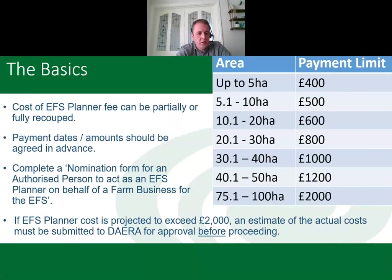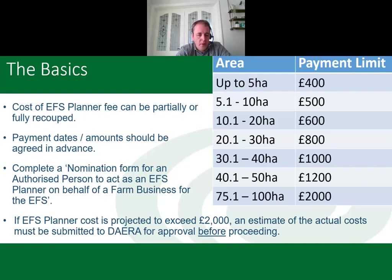The cost of the EFS planner fee can be partially or fully recouped. Payment dates and amounts should be agreed in advance - it's a private arrangement between you and your planner. Once you find a planner, there is a brief nomination form for an authorised person to fill in, available on the EFS section of the DAERA website. Your planner will likely have this or be able to direct you to it.